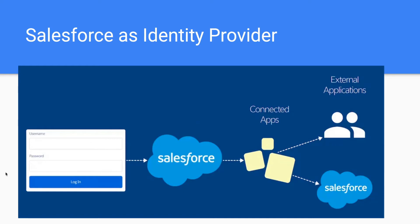In the visual flow, you provide your Salesforce username and password and log into Salesforce. At that point Salesforce has already established your identity. If the external application is ready to trust your Salesforce instance as an identity provider, you configure the connected app and clicking its icon from the app launcher logs you into the external application automatically. That external application could even be another Salesforce instance, making it a Salesforce-to-Salesforce login.